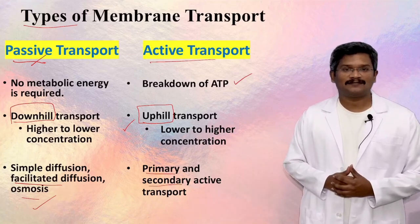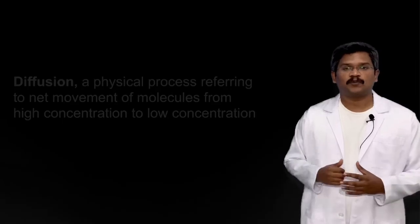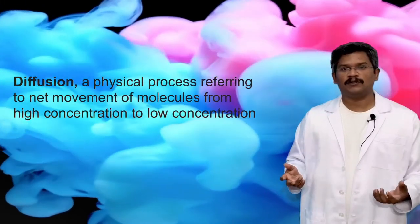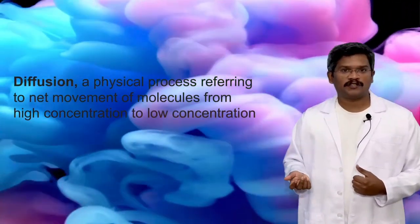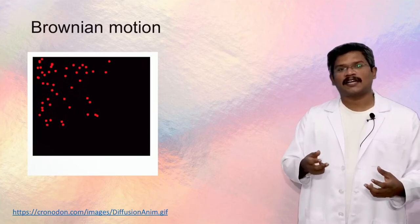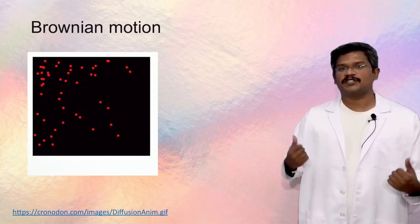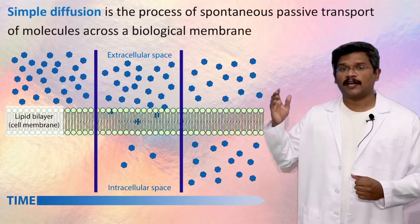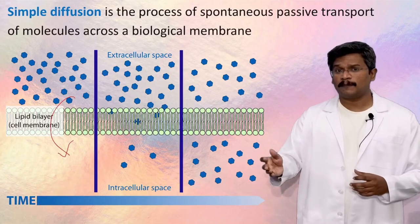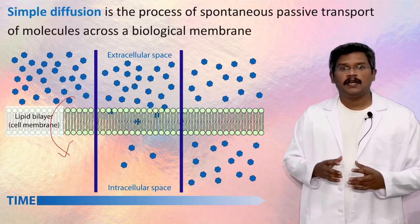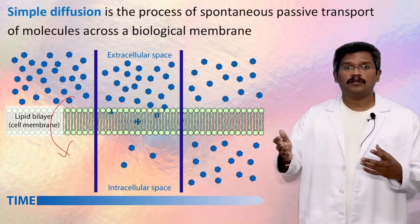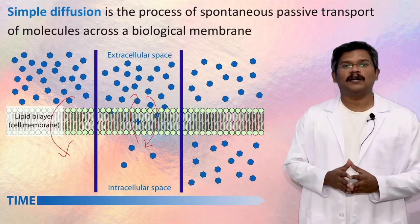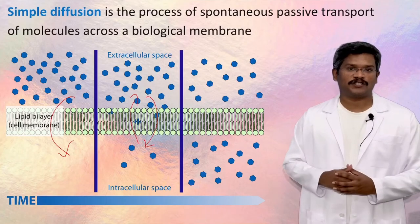Let us start with passive transport mechanisms. Diffusion is a basic physical process which refers to the movement of molecules from higher concentration to lower concentration. This is because of the random molecular movement happening in liquids and gases, referred to as Brownian motion. In biology, the movement of molecules from high to low concentration across a semipermeable membrane is called simple diffusion. Though molecular movement happens in both directions, the net molecular movement happens only from high to low concentration.